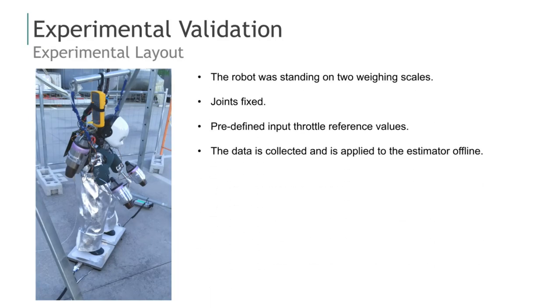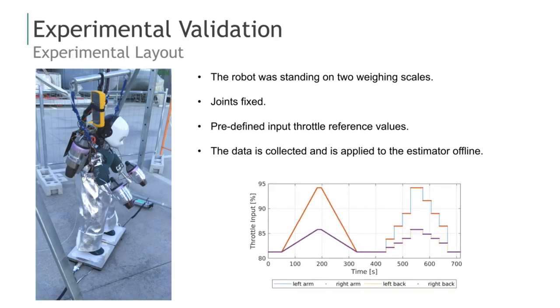The robot was standing on two weighing scales, and its joints were fixed on the configuration shown in the picture. The following input throttle reference values are sent to the jet engines. The data is collected and is applied to the estimator offline.